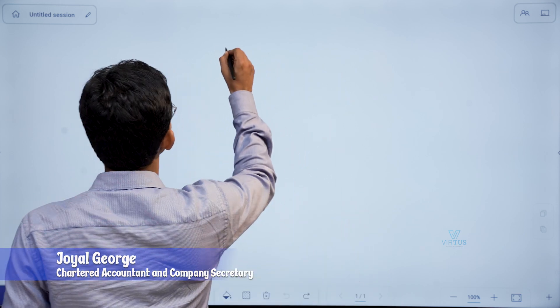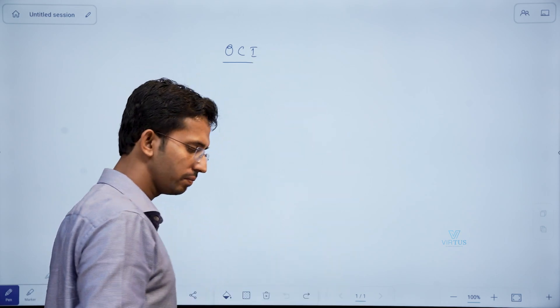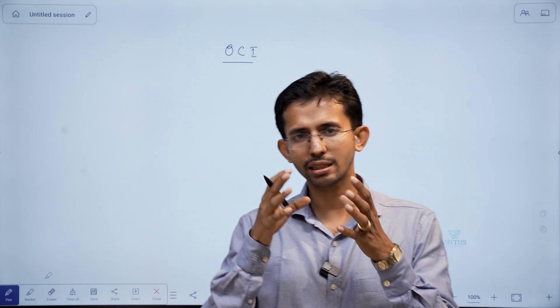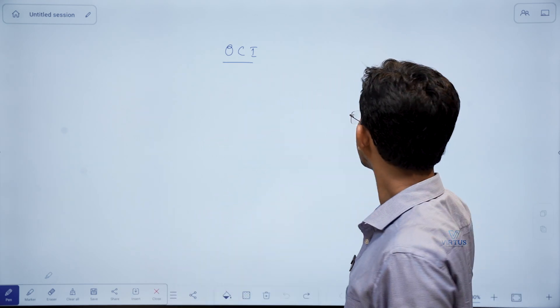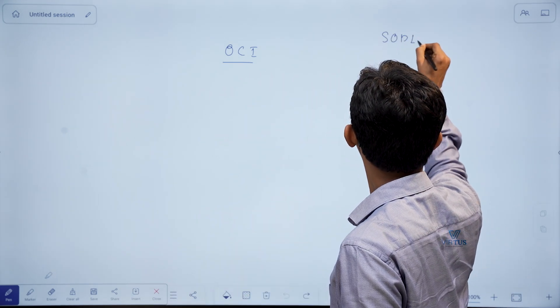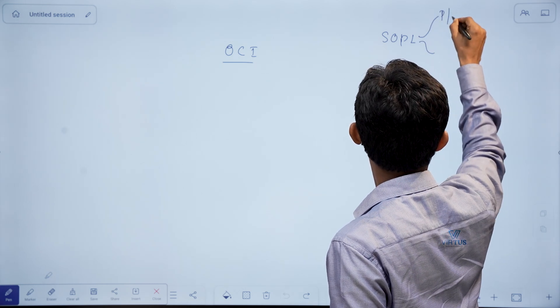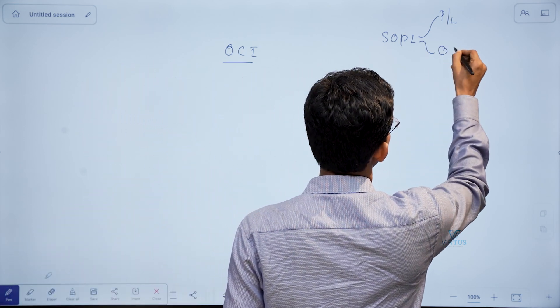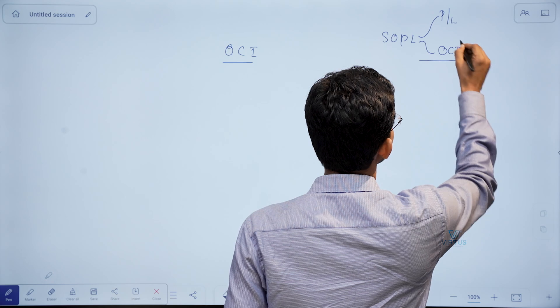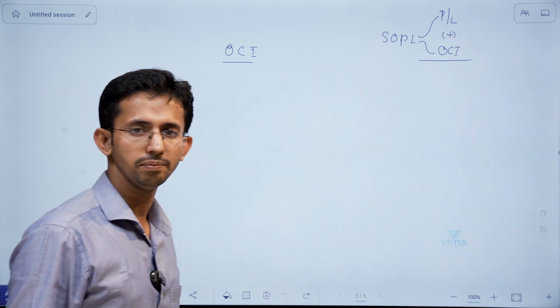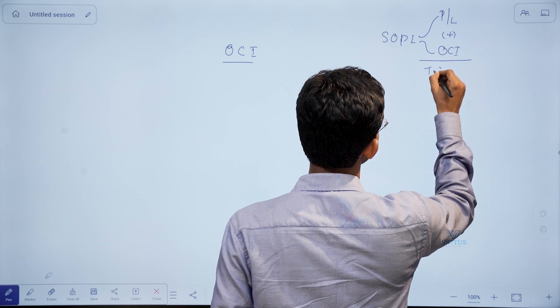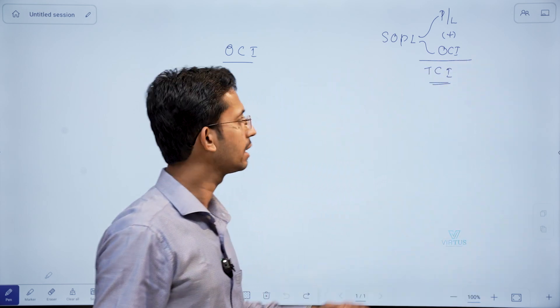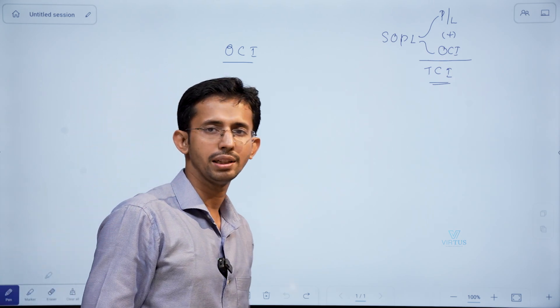Let us learn about the concept of Other Comprehensive Income, or OCI. When you prepare a statement of profit or loss under Ind AS, that statement will have two sections: one is the normal profit or loss for the period, and the other is a separate section called Other Comprehensive Income, or OCI. The total of profit or loss for the period and OCI gives you the Total Comprehensive Income for the period.